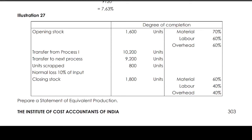Illustration 24: Opening stock is 1,600 units and the transfer from Process 1 is 10,200 units. Transfer to the next process is 9,200 units, units scrapped 800, normal loss 10% of output — note it's output, not input. Closing stock is 1,800 units. Degree of completion for opening stock: material 70%, labor 60%, overhead 60%. For closing stock: material 60%, labor 40%, overhead 40%. Prepare a statement of equivalent production.